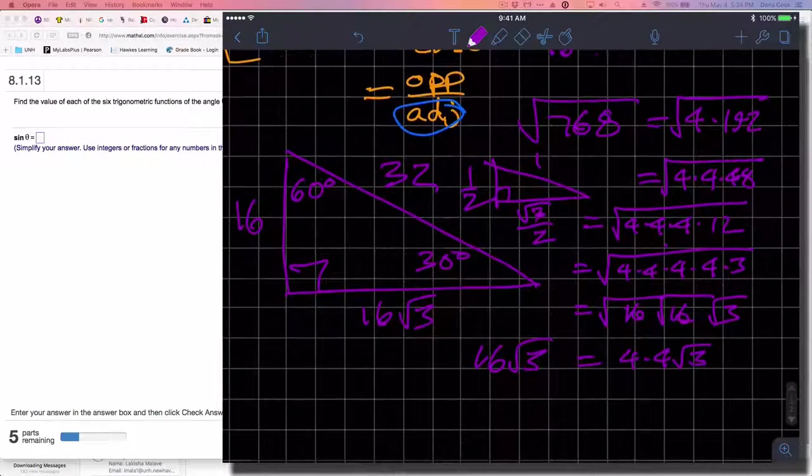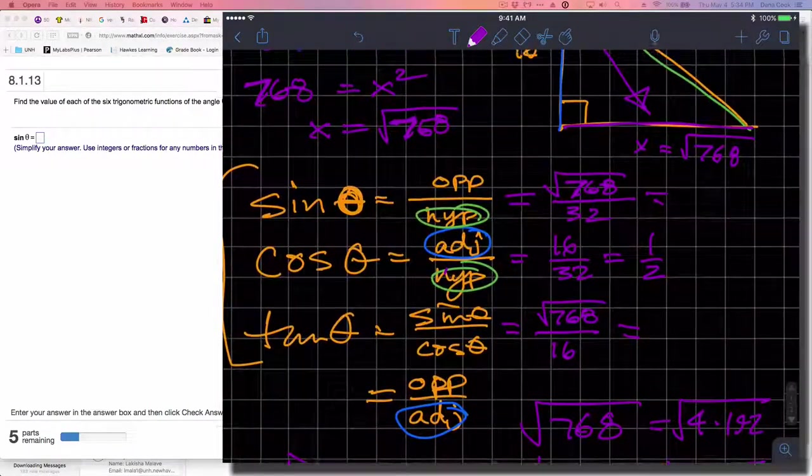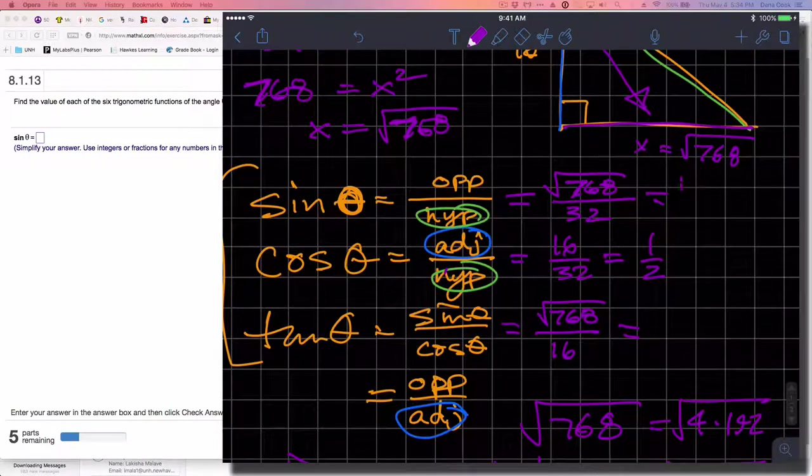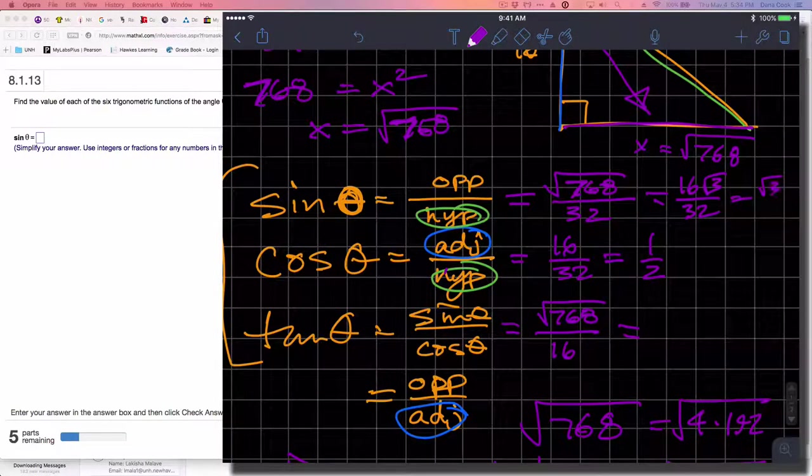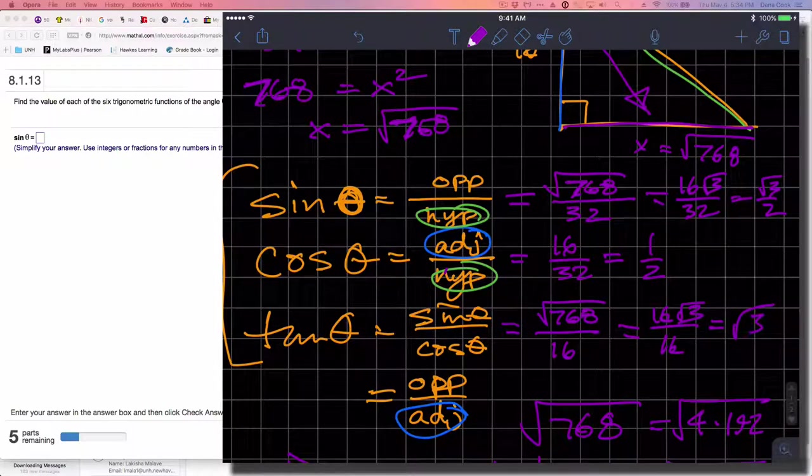16 radical 3 over 32 can be written as radical 3 over 2, and that one's one half. The tangent is 16 radical 3 over 16, which equals radical 3.